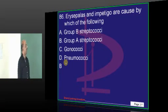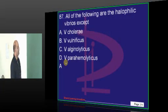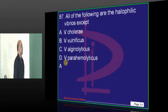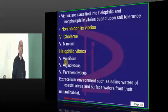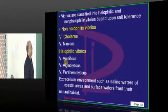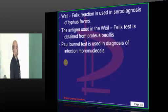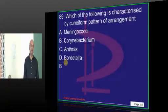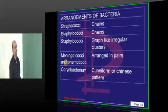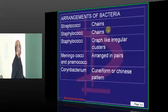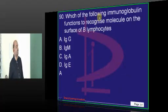Group A streptococci — erysipelas and impetigo is what need to be remembered. Halophilic vibrios: Vulnificus, alginolyticus, and parahaemolyticus — they are all sea-loving, beach-living halophilic organisms. Coming to typhus, we use the Weil-Felix reaction. Cuneiform pattern — very typical of Corynebacterium. Streptococcus and staphylococci are chains, meningococci are pairs, Corynebacterium shows Chinese letter pattern.